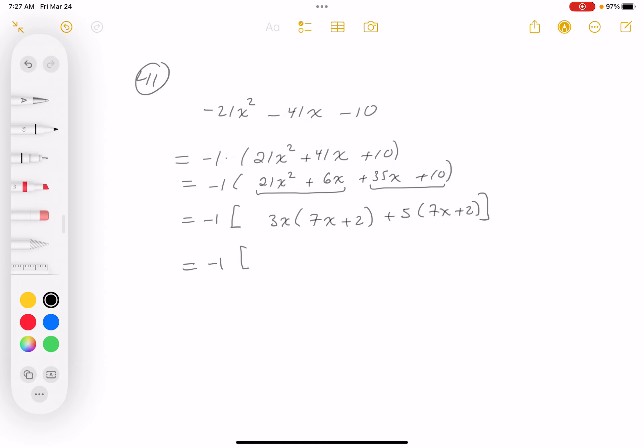Minus 1. And I'm ready to factor what's on the inside of that square bracket over there. Here, 7x plus 2, and 3x plus 5. What does this give you? Minus 7x plus 2, 3x plus 5.